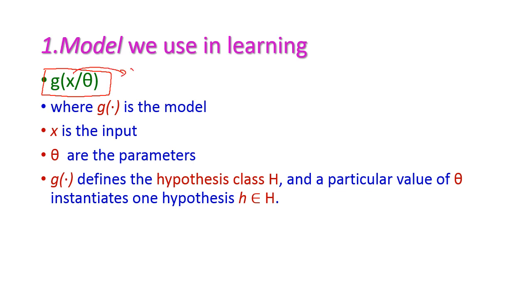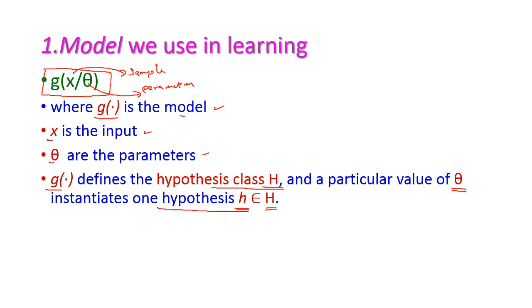The first dimension is the model g(x; θ) used in learning. Here x is the sample being classified with respect to the parameter θ. The model g is the supervised learning function where x is the input and θ are the parameters. The purpose of this model is to define the hypothesis class H, and based on the theta value it instantiates any one hypothesis h belonging to capital H.